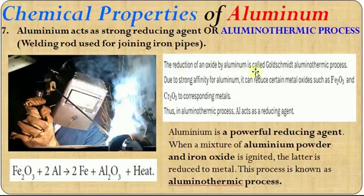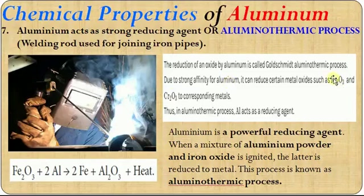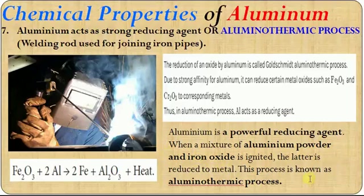In the Aluminothermic process, Aluminium acts as a strong reducing agent due to its strong affinity for oxygen. It can reduce metal oxides such as iron oxide and chromium oxide to their corresponding metals — iron oxide is reduced to iron, chromium oxide is reduced to chromium — because Aluminium is higher in the reactivity series than iron and chromium. The mixture of Aluminium powder and iron oxide is ignited, the iron oxide is reduced to iron, and this process is called the Aluminothermic process, used in welding.